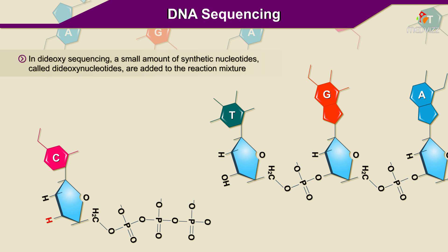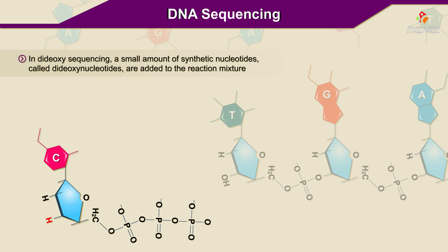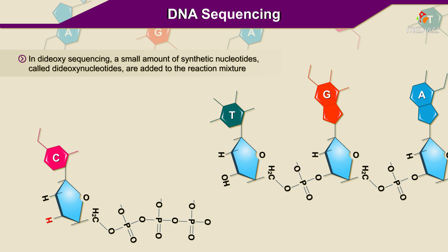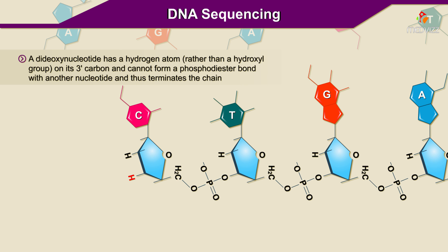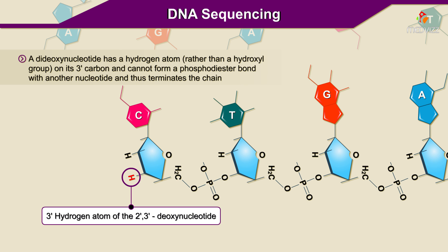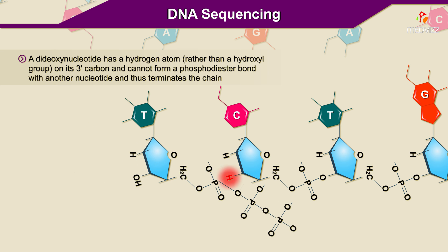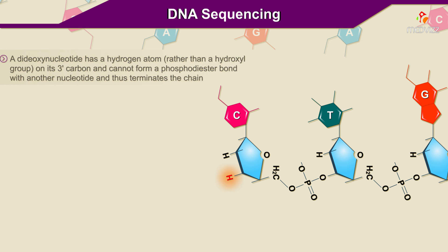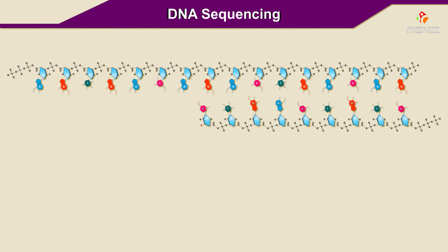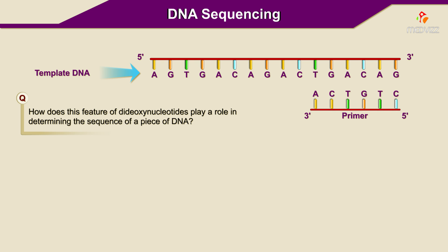In dideoxy sequencing, a small amount of synthetic nucleotides called dideoxynucleotides are added to the reaction mixture. A dideoxynucleotide has a hydrogen atom rather than a hydroxyl group on its three prime carbon and cannot form a phosphodiester bond with another nucleotide, and thus terminates the chain. How does this feature of dideoxynucleotides play a role in determining the sequence of a piece of DNA?